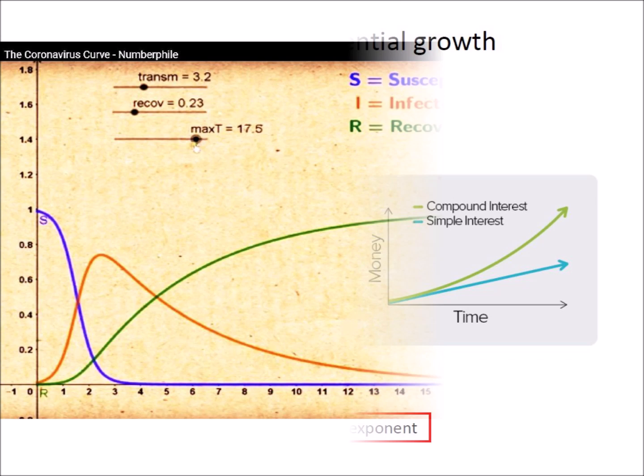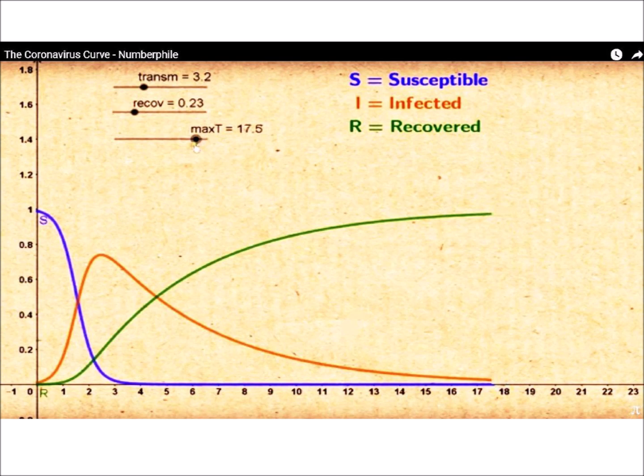Mathematical models are used to predict the effects of a pandemic. The rate of transmission and the rate of recovery determine the peak of the infection. For a new virus like COVID-19, all of the population is susceptible to the infection. The number of infected people increases as the virus is transmitted to susceptible individuals, but decreases as they recover or die. The peak of the infection indicates the maximum percentage of the population that will be sick at the same time and the burden placed on medical facilities.